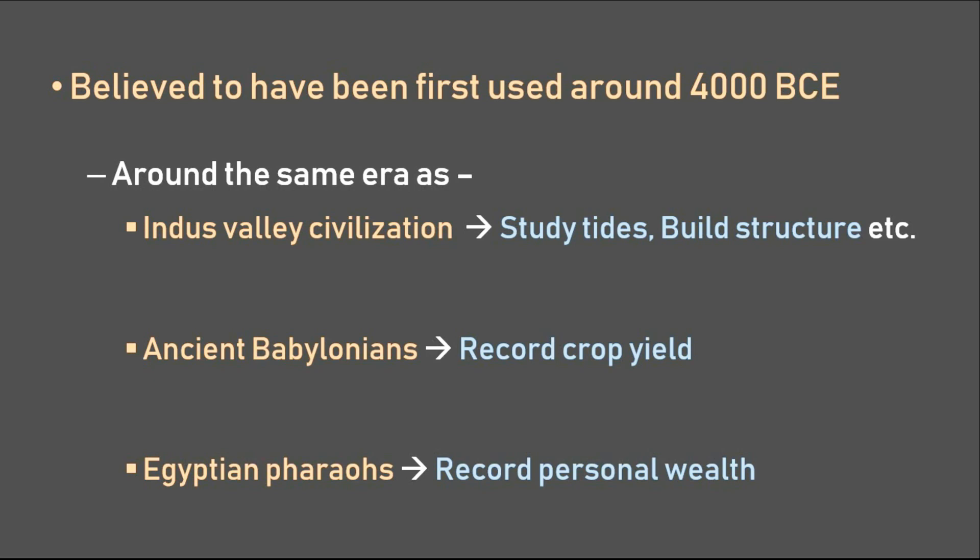It is considered to be amongst the first civilizations in the world. The people of Indus Valley have been known to have used it to study demographics, tides in the Indus River, and many more things like building structures. At around the same time, give or take a few years, the ancient Babylonians and Egyptian pharaohs too employed this knowledge to record crop yield and record personal wealth respectively.